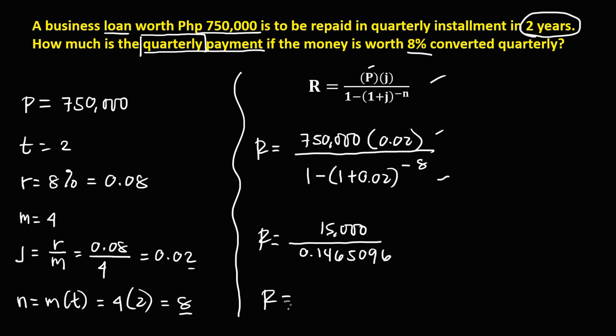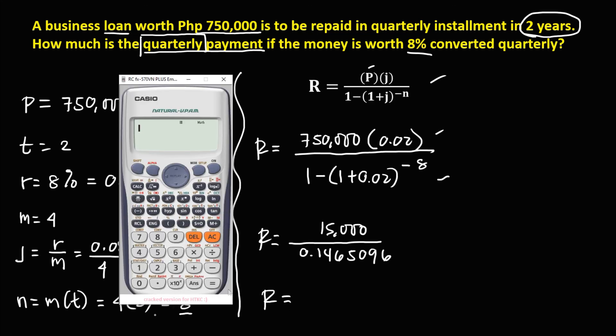So to solve now for the regular payment, we have 15,000, divided by 0.1465096, equals, so that's 102,382.37.